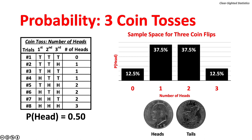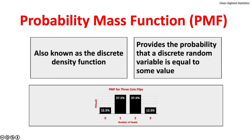Here is the probability distribution for tossing a coin three times. As shown on the table on the left, there are eight possible outcomes. The probability of no heads equals 12.5%, one head equals 37.5%, two heads equals 37.5%, and three heads equals 12.5%. The probability mass function, or PMF, provides the probability that a discrete variable is equal to some value, also known as the discrete density function. This column chart shows the probability mass function for the outcomes of flipping a coin three times.